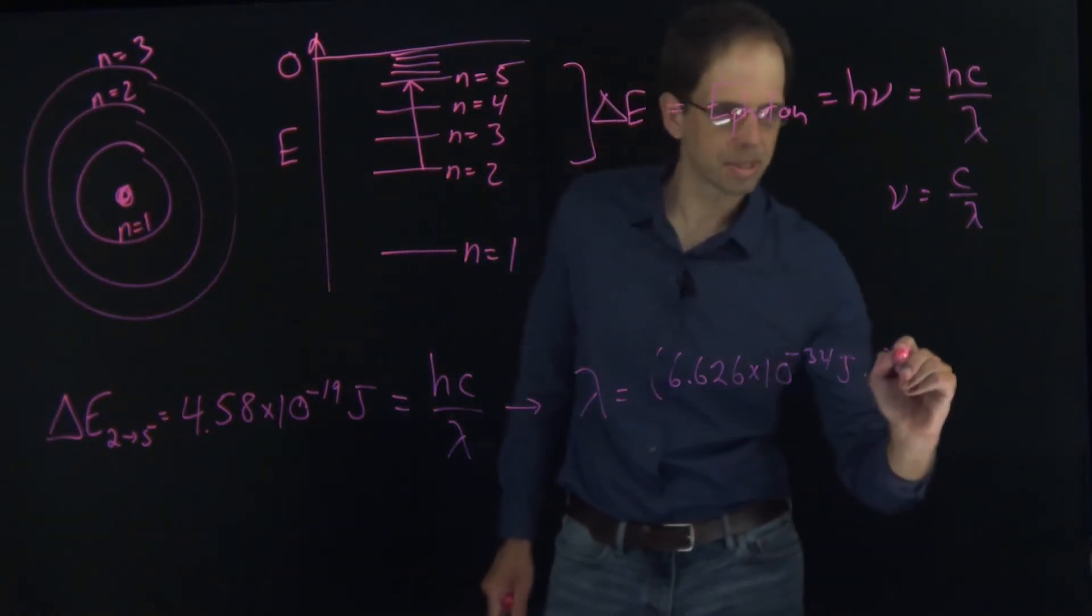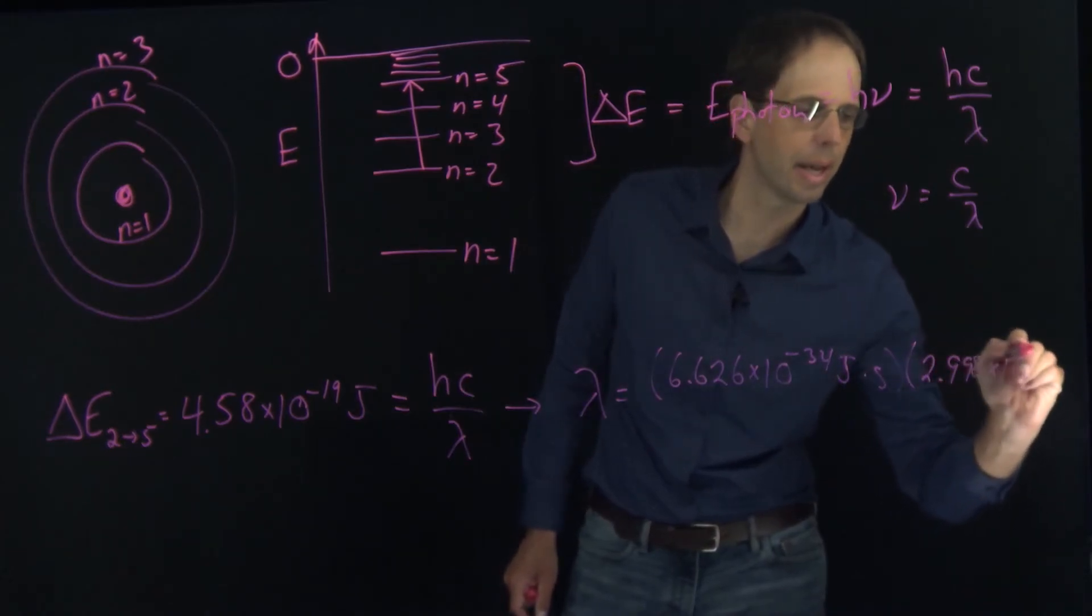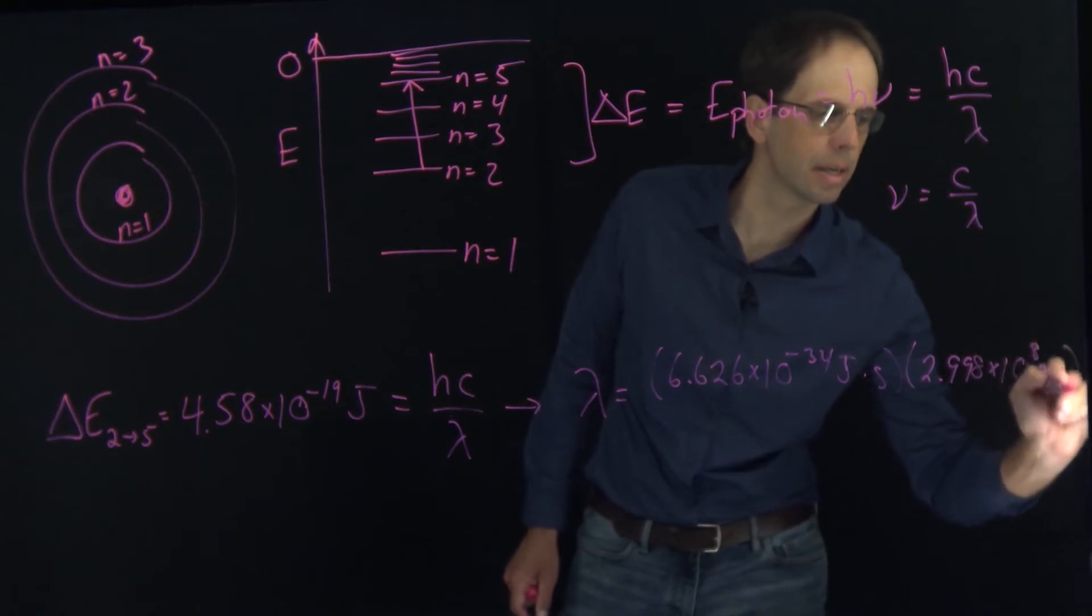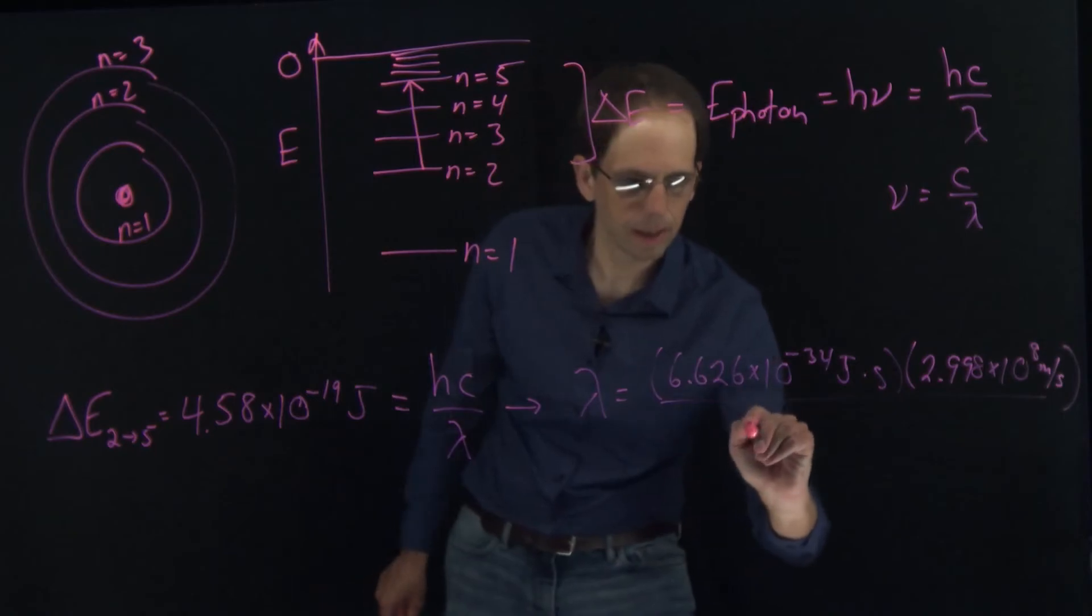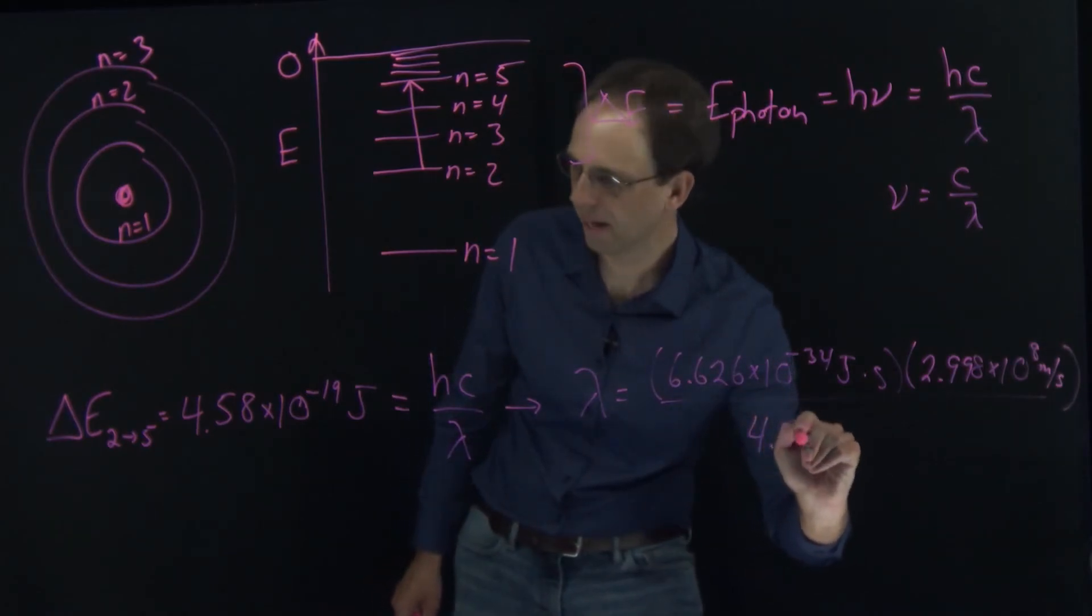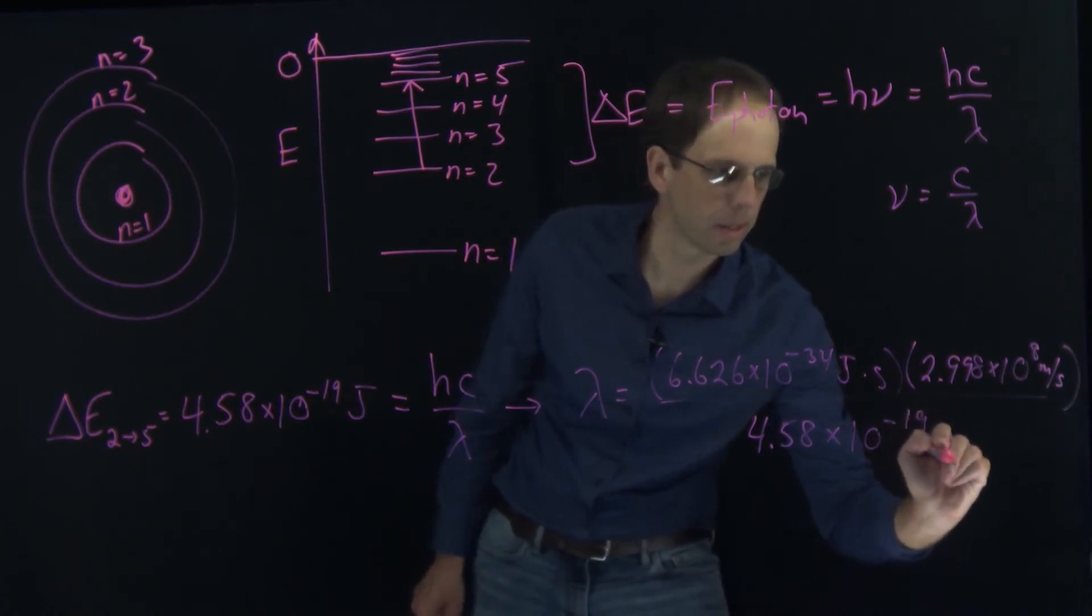Divided by our delta E, 4.58 times 10 to the minus 19 joules.